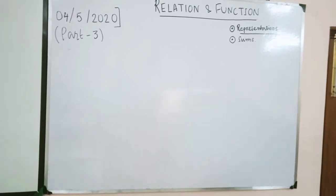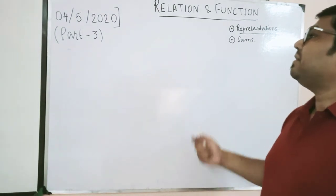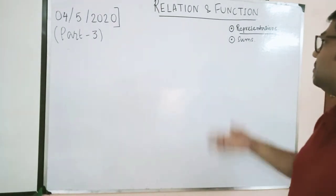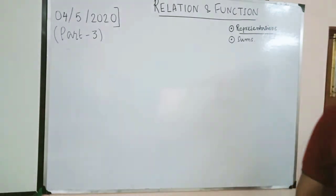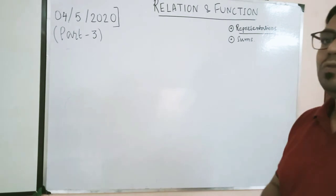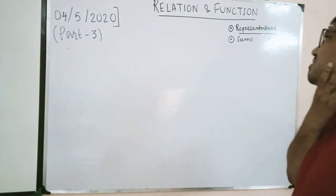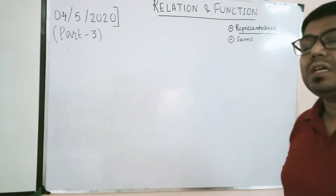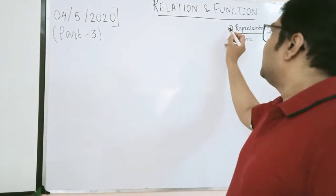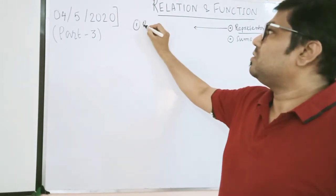Good morning students. Today we are back with Relations and Functions, Part 3. We will be discussing the representation of a relation — how it can be represented — and also do a few sums. There are three representations: one is the roster form, the second is the set builder form, and the third is the arrow diagram.